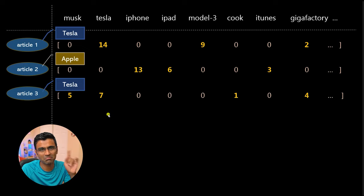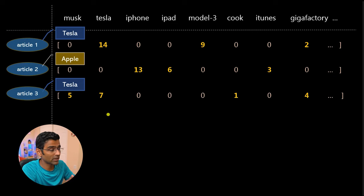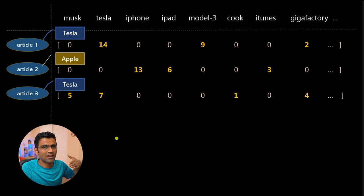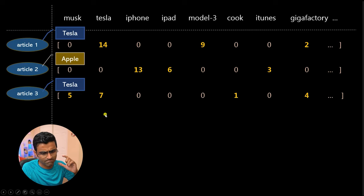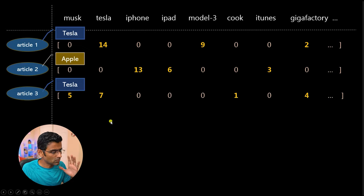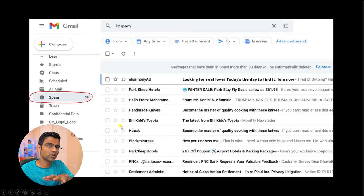This is bag-of-words — a numeric representation where you have a vocabulary, you get the word count for each word present in the document, and you create a vector. That vector is also called a count vectorizer, which you'll encounter in scikit-learn as a class called CountVectorizer.